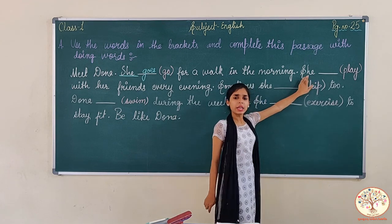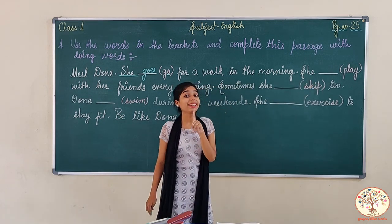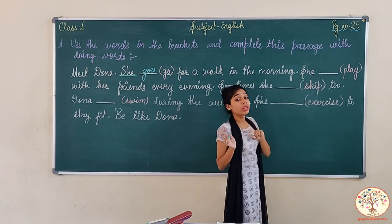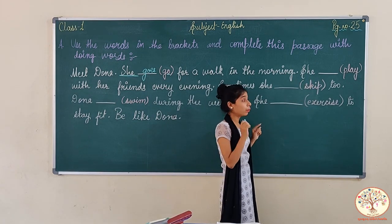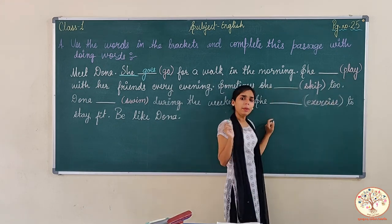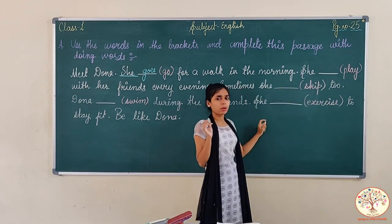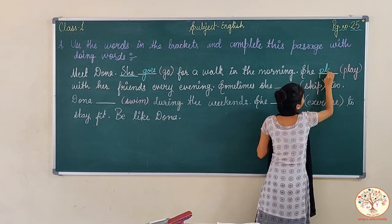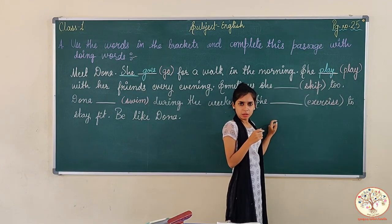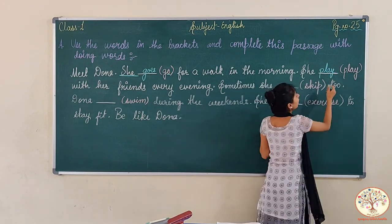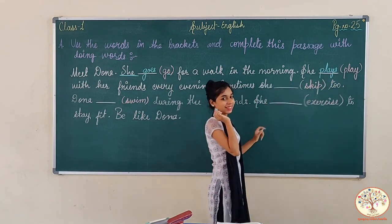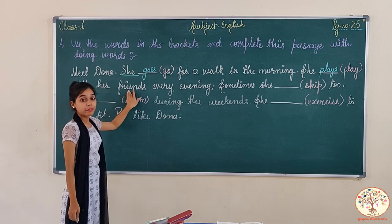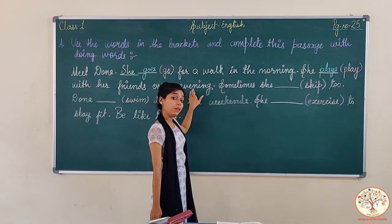She — again 'she' — she means one girl. So when we talk about one girl, the doing word will be in its plural form. The word is 'play' — what will be the plural form of play? Yes, 'plays'. Do we add ES? No, we add only S. She plays with her friends every evening.